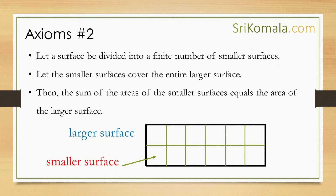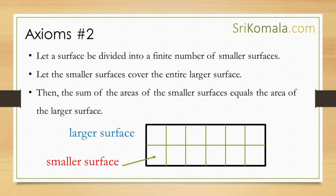Axiom number 2: firstly, let a surface be divided into a finite number of smaller, non-overlapping surfaces. Secondly, let the smaller surfaces cover the entire larger surface. Then, the sum of the areas of the smaller surfaces equals the area of the larger surface. This can be confirmed from the figure shown in this slide.